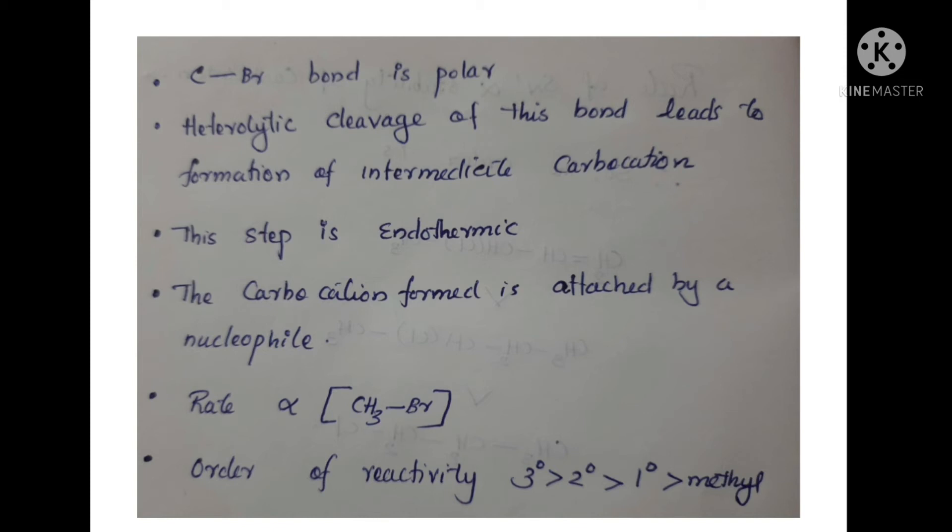For SN1 reactivity, a tertiary carbocation forms most easily because it is most stable. The stability is due to the positive charge distribution and the possibility of resonance stabilization, which also enhances the stability of the tertiary carbocation.